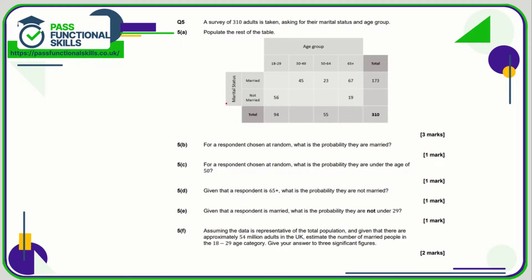Question five: first we populate the table. The most important thing to remember is that the numbers on the right are totals of those rows, the numbers on the bottom are totals of those columns, and 310 is the sum of both married and not-married totals and all age group totals. This missing number is 310 minus 173, which is 137.